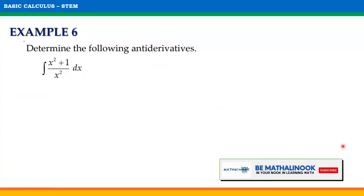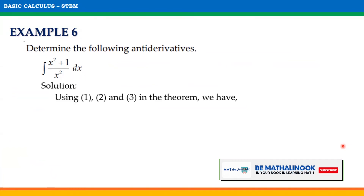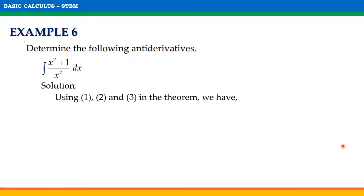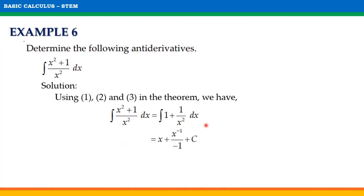For our last example, let us solve for the indefinite integral of x squared plus 1 over x squared with respect to x. Before using theorems 1, 2, and 3, we simplify the given. Notice that when we divide the two terms x squared and 1 by x squared, we will have 1 plus 1 over x squared. Solving for the indefinite integral of 1 plus 1 over x squared with respect to x, we get x plus x raised to negative 1 divided by negative 1 plus c. Simplifying, we get x minus 1 over x plus c.